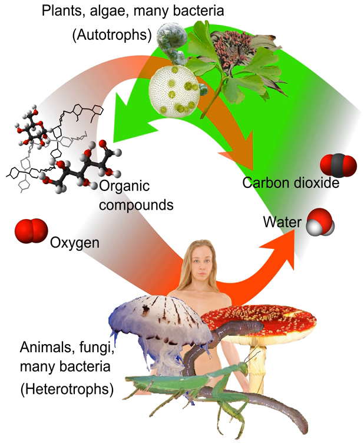In the food chain, heterotrophs are secondary and tertiary consumers. 95% or more of all types of living organisms are heterotrophic, including all animals and fungi and some bacteria and protists.